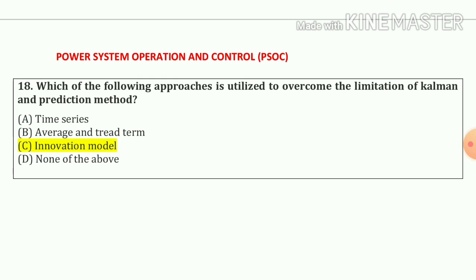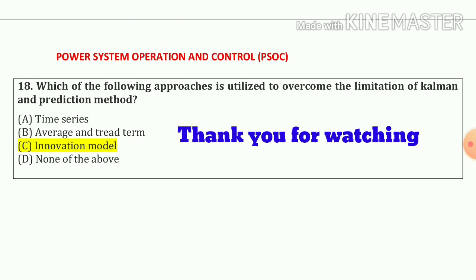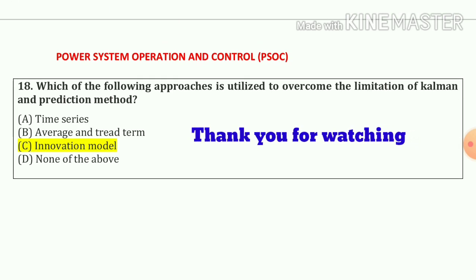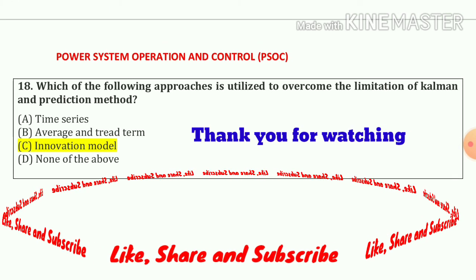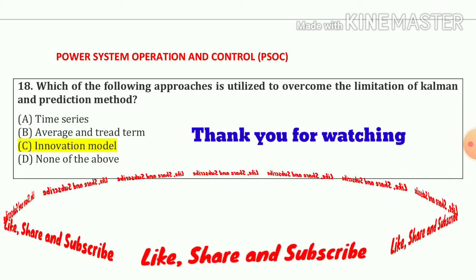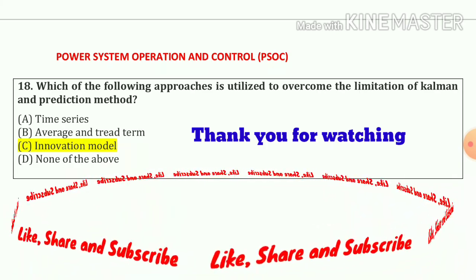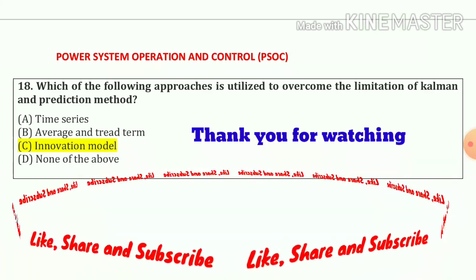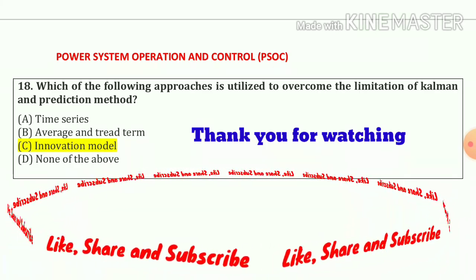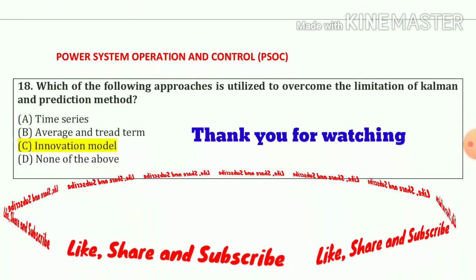Question number 18. Which of the following approaches is utilized to overcome the limitations of the Kalman prediction method? So our answer is option number C — innovations model.